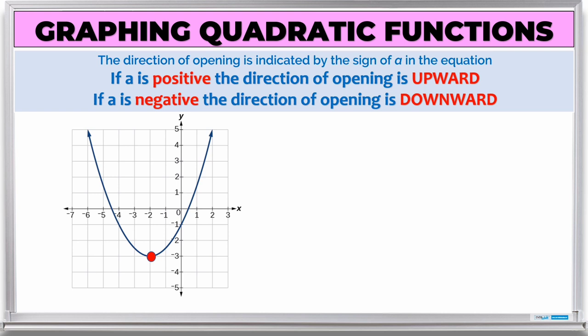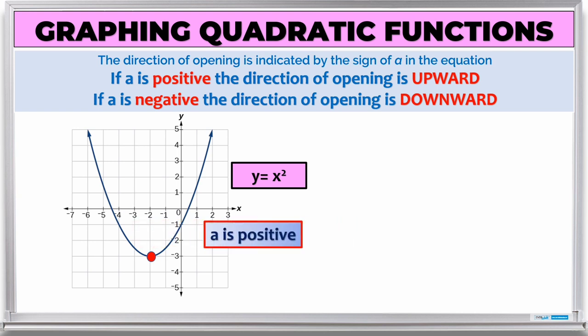The direction of opening is indicated by the sign of 'a' in the equation. If a is positive, the direction of opening is upward. If a is negative, the direction of opening is downward. For example, y = x² has a = 1, which is positive, so the graph opens upward.